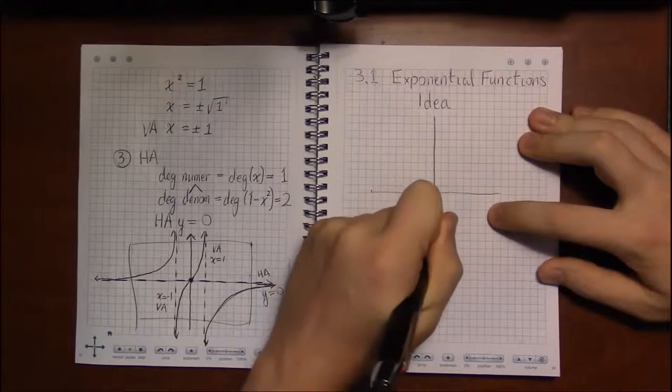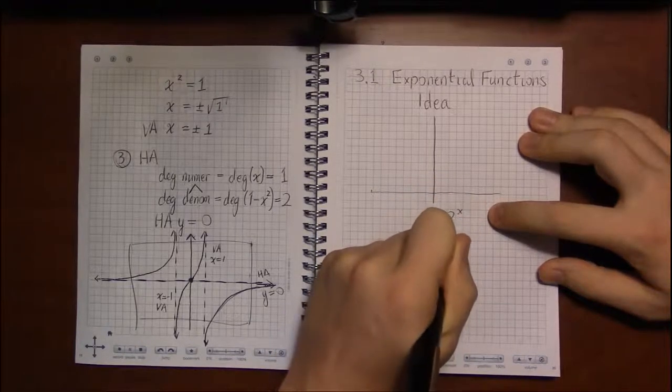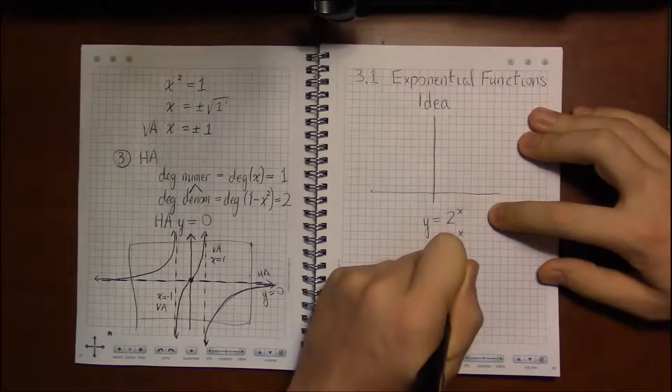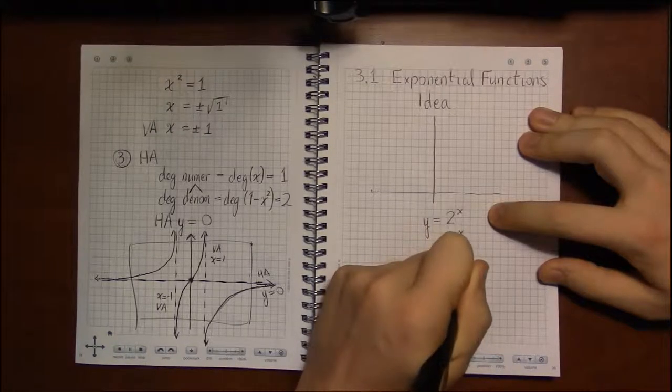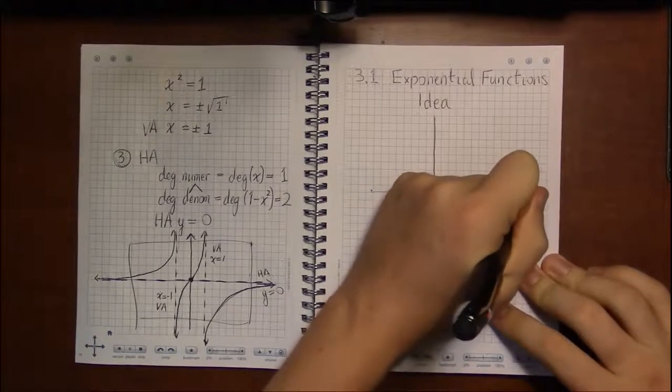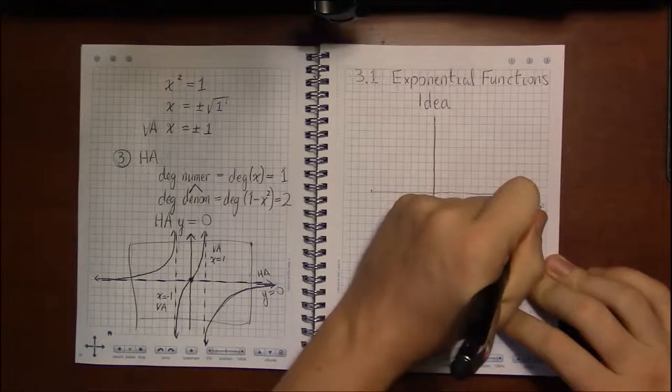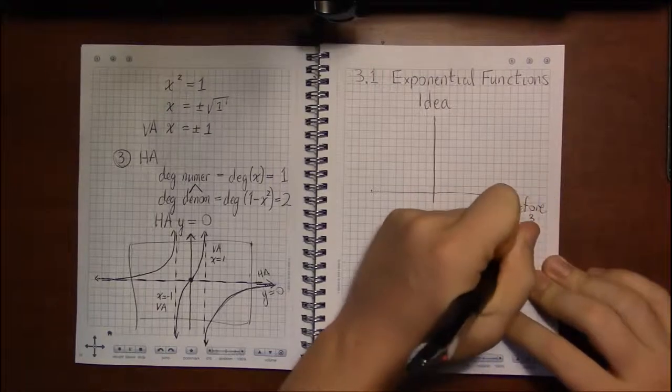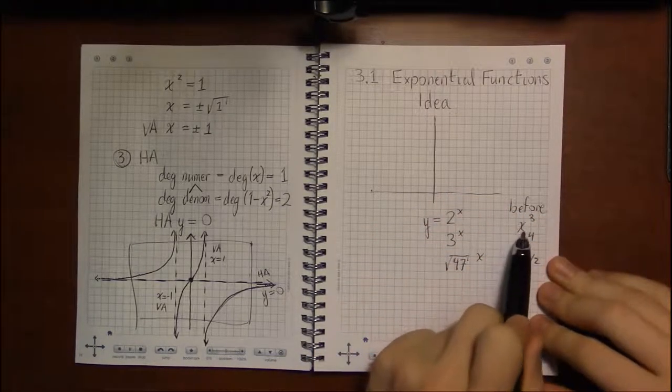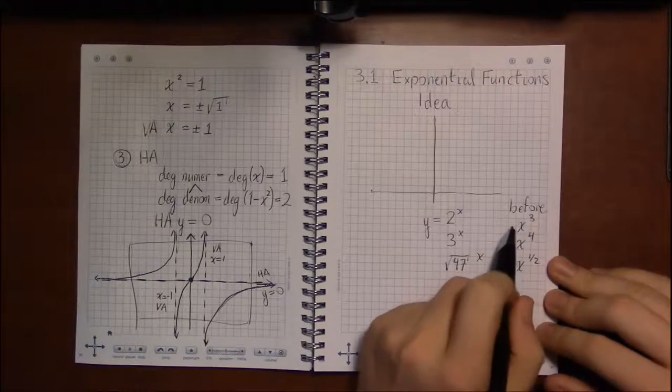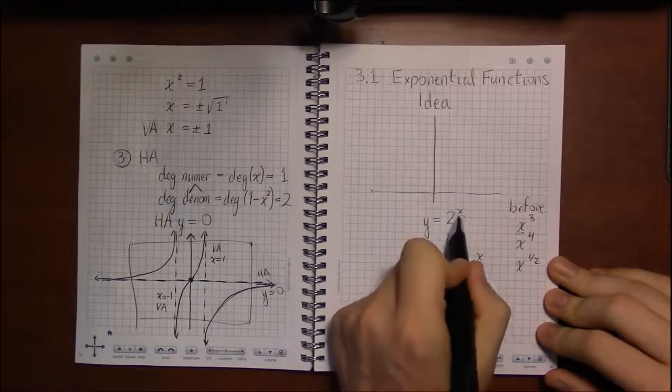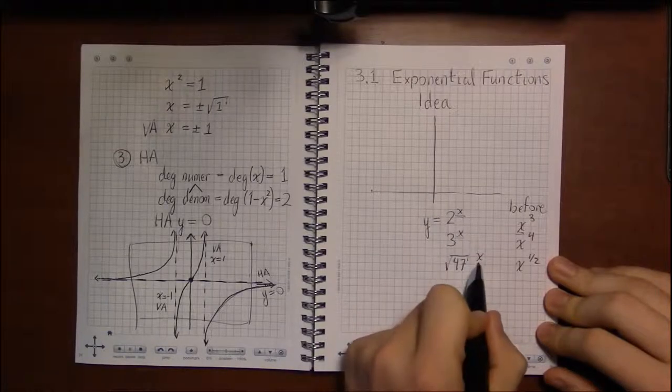For example, we can look at something like 2 to the x or 3 to the x or even square root of 47 to the x, just anything to the x power. Whereas before, we were dealing with functions in which the exponent was constant: x cubed, x to the 4th, x to the 1 half. Here the variable is in the position we call the base. Whereas with exponential functions, the variable is in the exponent position, it's in the superscript.